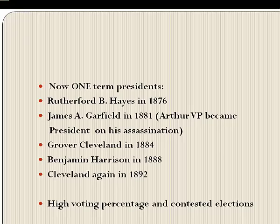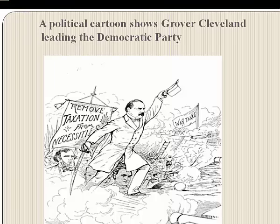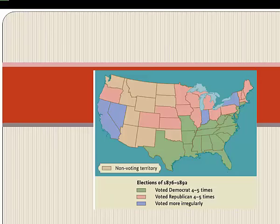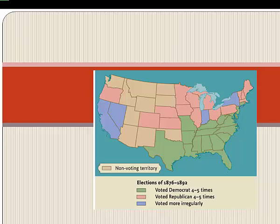The American electorate had one of the highest voting percentages we've ever had. A political cartoon shows Cleveland leading the Democratic Party. The southern states voted solid Democrat. What's surprising is that New York State, usually in the Democratic column, is not during this period. California, Nevada, New York, and Illinois essentially didn't commit, and the population in those pink areas was actually higher than the green Democratic areas.